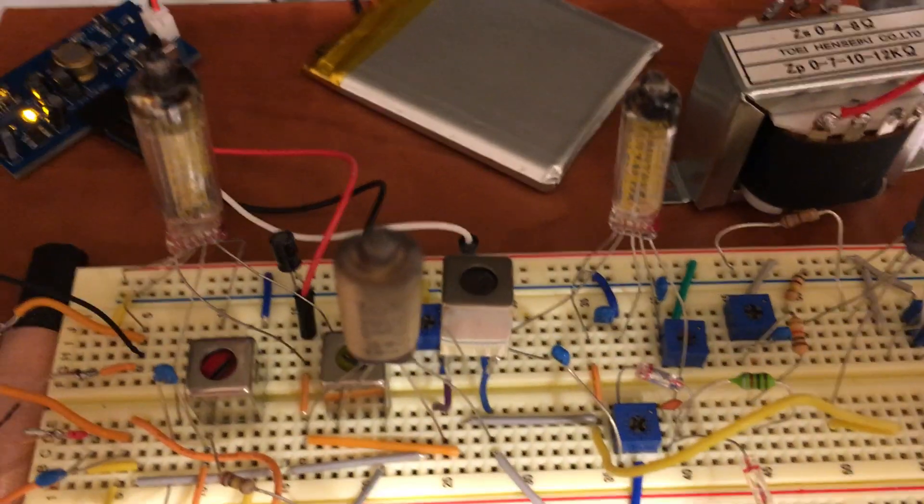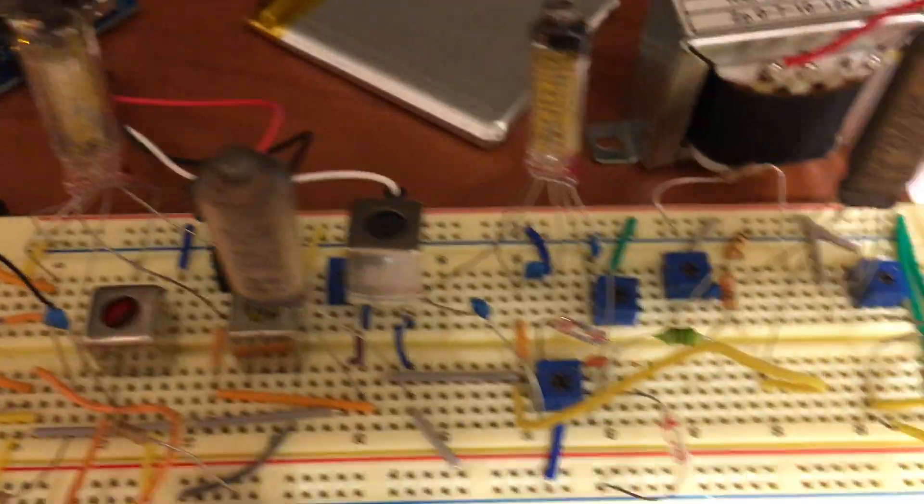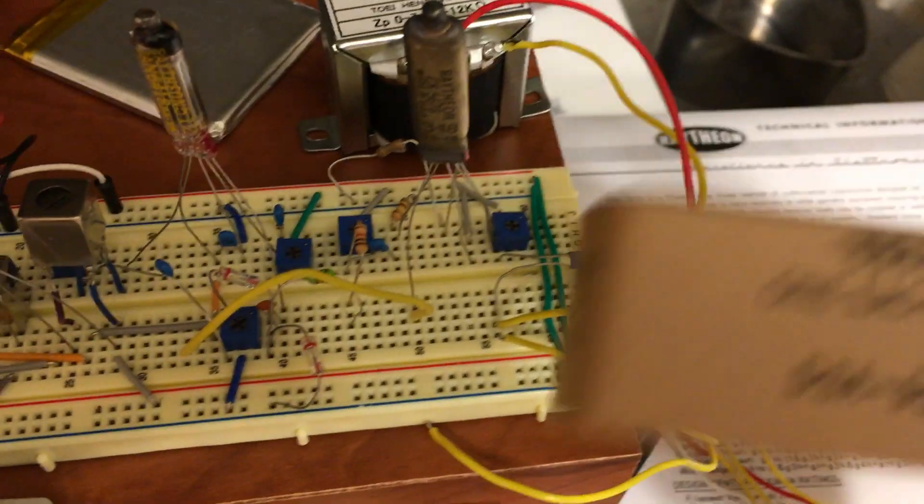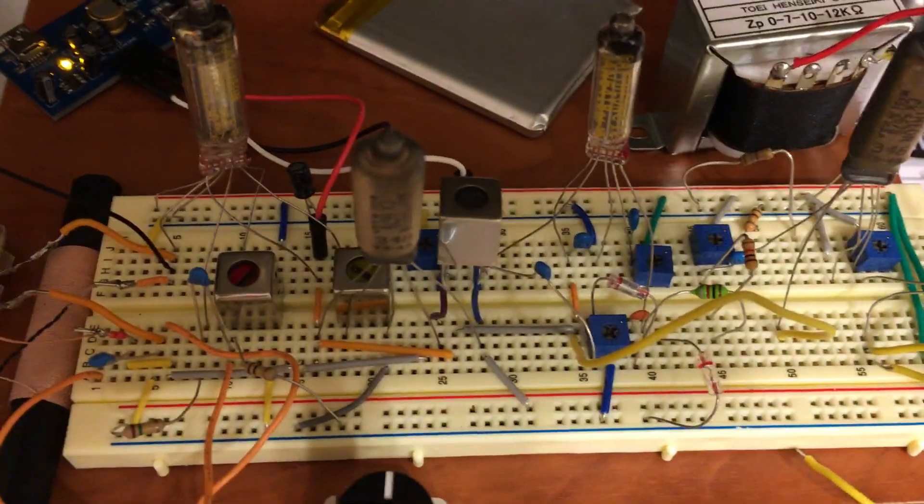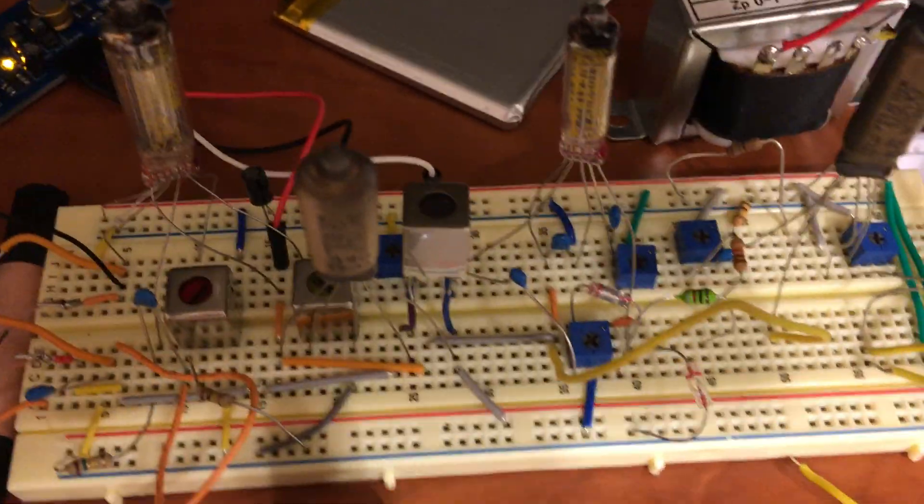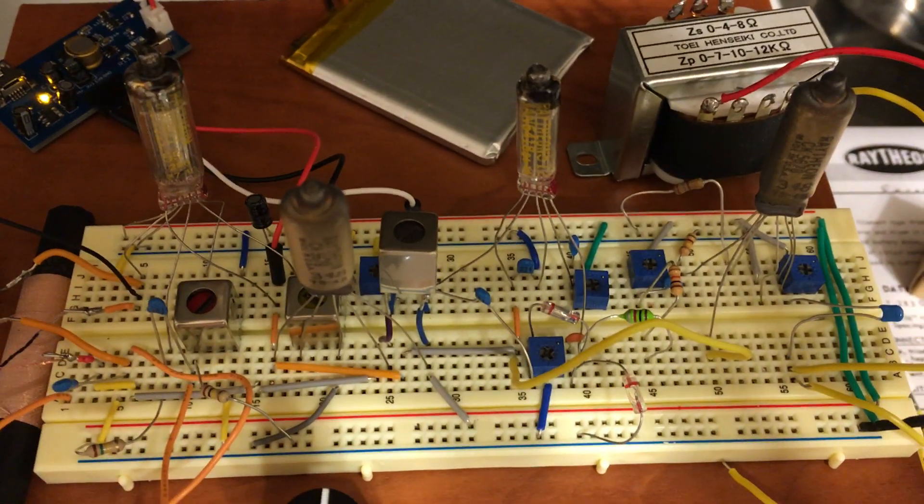Sub-miniature tubes are much more modern than miniature tubes. For example, this was made in 1967, relatively new, about 50 years ago. It's working. Have fun.